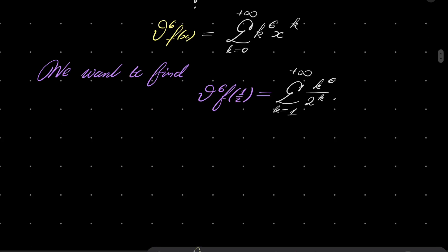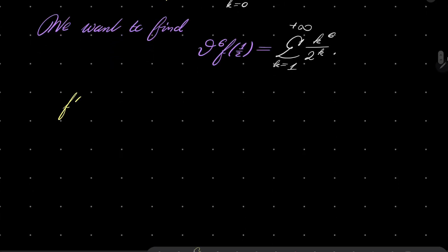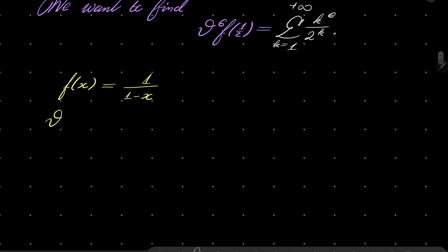Quite a bit of work and I will leave the details but basically we will have the following: f of x equals this, theta of x is x over 1 minus x squared, theta squared is x squared plus x over 1 minus x cubed.